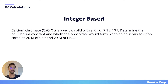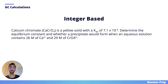Calcium chromate is a yellow solid with a solubility product constant of 7.1 times 10 to the negative 4. Determine the equilibrium constant and whether a precipitate would form when an aqueous solution contains 26 moles per liter of calcium ions and 29 moles per liter of chromate ions.